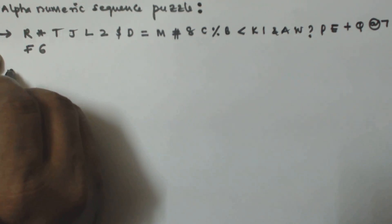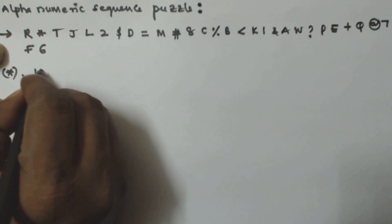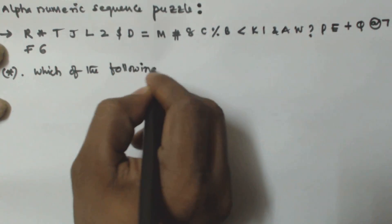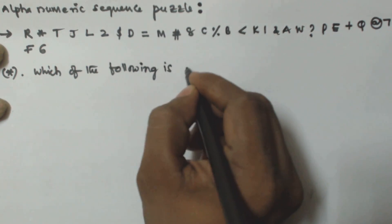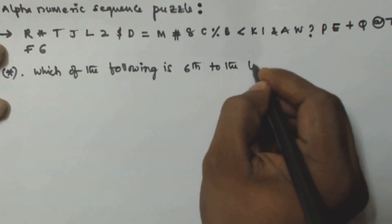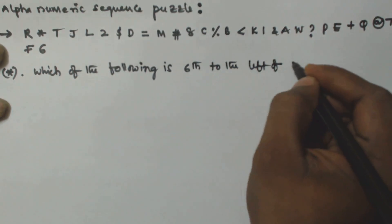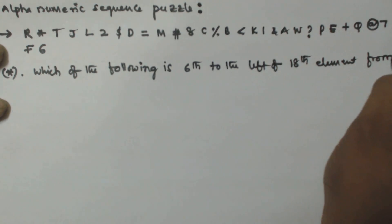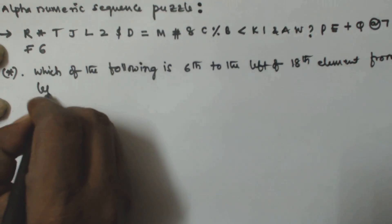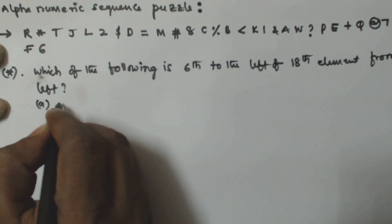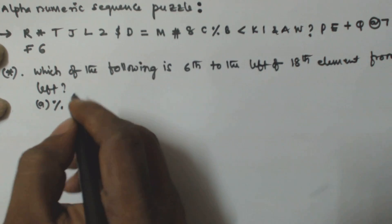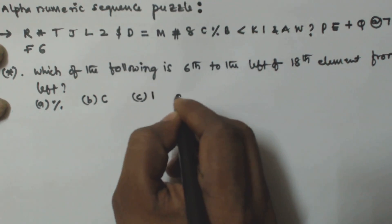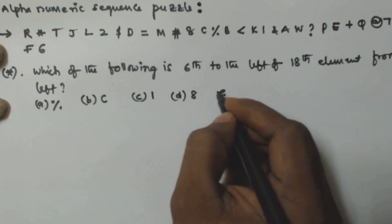Based on this sequence, we have to solve two questions. The first question is: which of the following is 6th to the left of the 18th element from the left? Option A is %, option B is C, option C is 1, option D is 8, and option E is none of these.